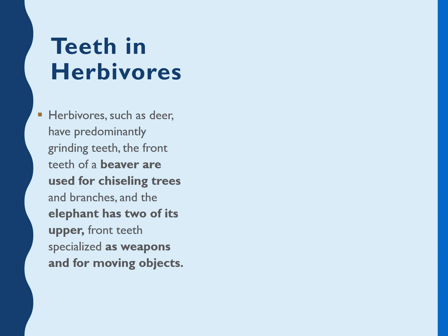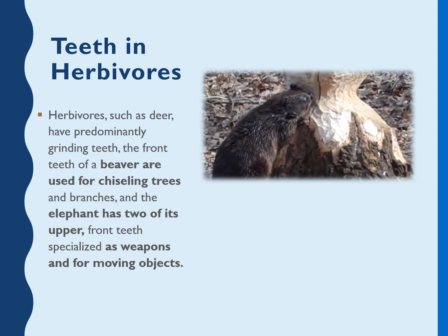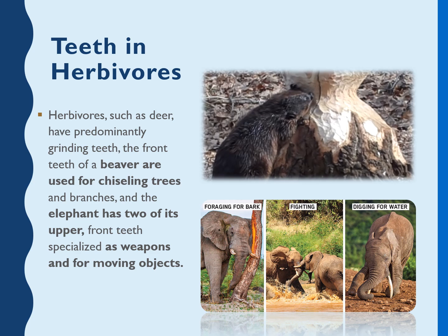Herbivores such as deer have predominantly grinding teeth. The front teeth of a beaver, as shown in the figure, are used for chiseling trees — you can see considerable chiseling has been done. Elephants have two upper front teeth specialized as weapons and for moving objects — we call these tusks. Elephants use tusks for foraging for bark, moving objects, fighting as weapons, and digging for water.